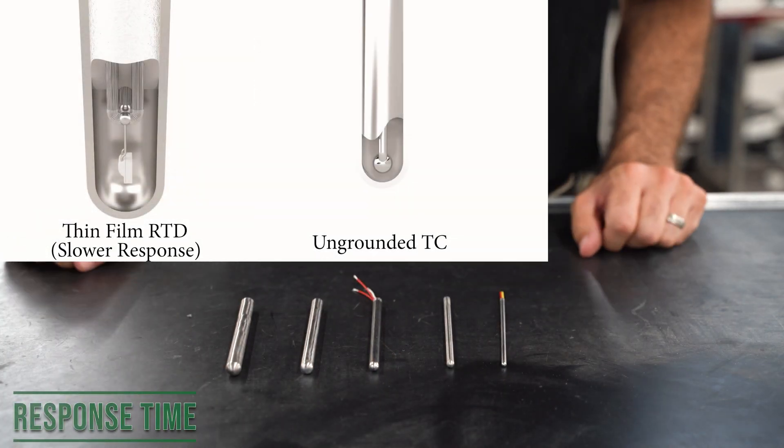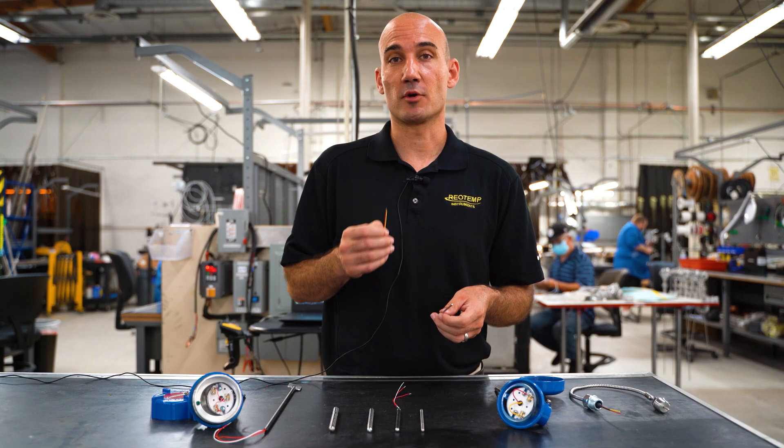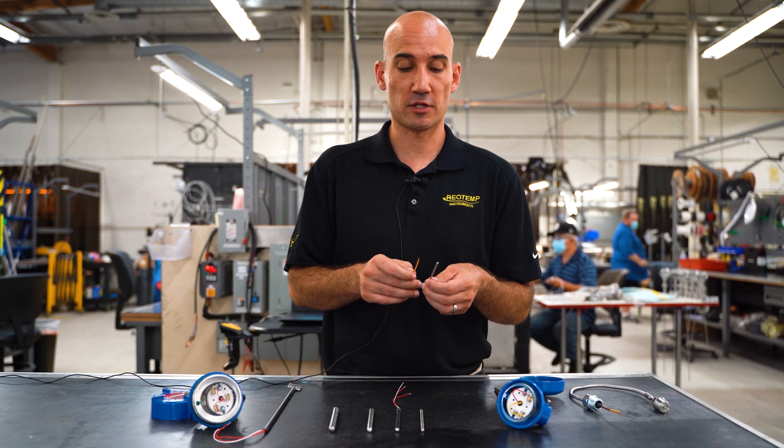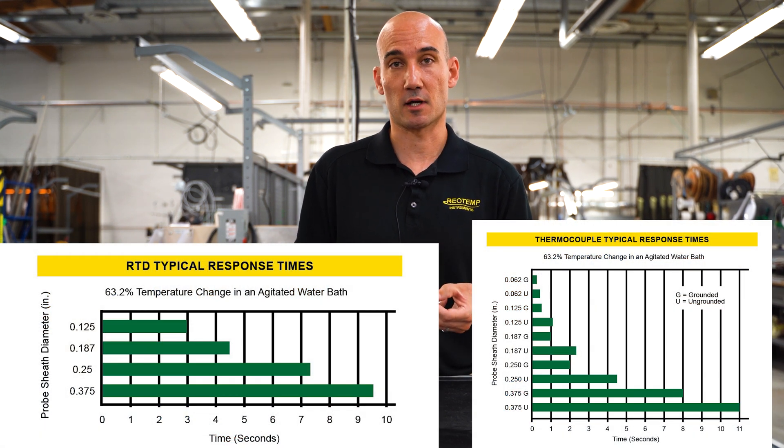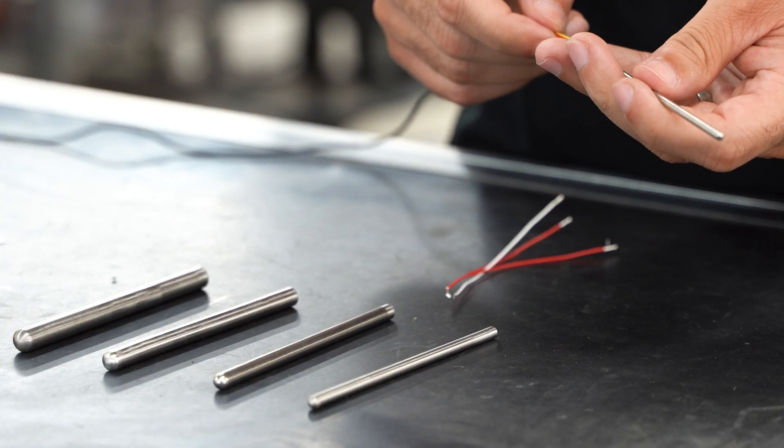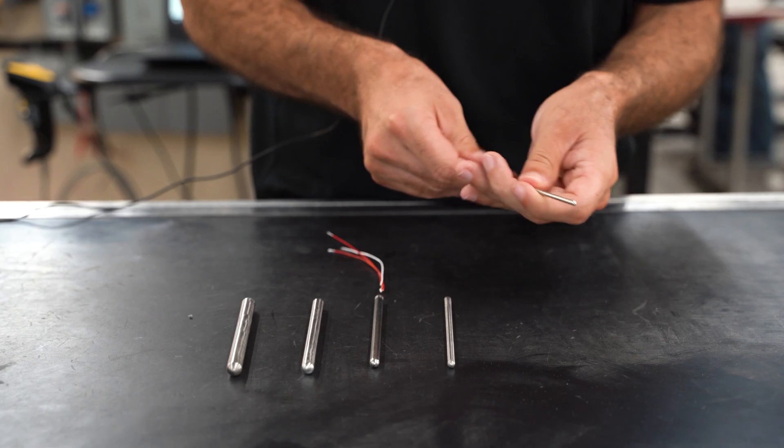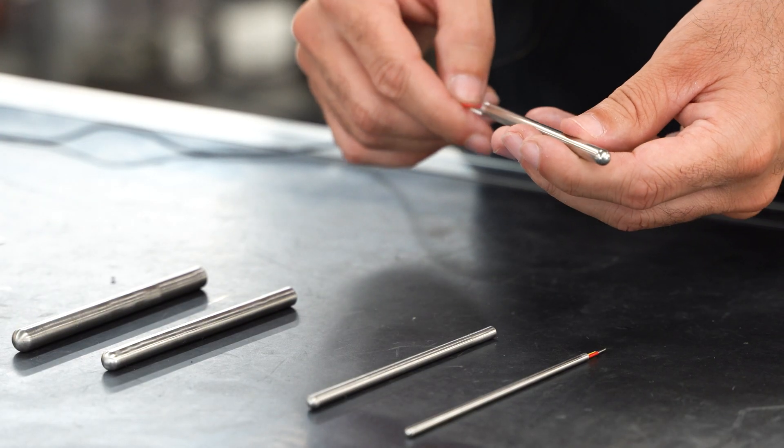RTDs cannot be grounded, which gives them a slower response time than a grounded thermocouple. Also, a thermocouple can fit inside of a smaller sheath diameter, and that smaller sheath diameter will give you a reduced response time. For example, a grounded thermocouple inside of a 1/16th stem diameter is going to have a faster response time than an RTD inside of a 1/16th diameter stem.